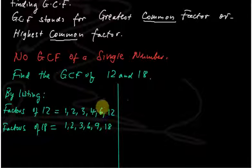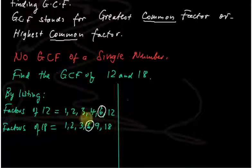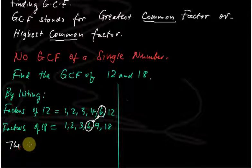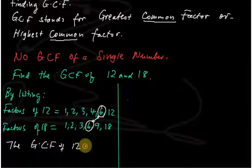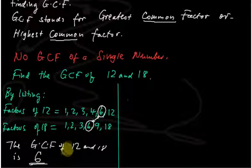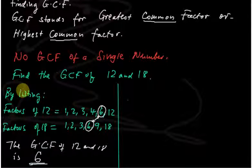While 1, 2, and 3 are all common factors, they are not the greatest. 6 is found in both numbers and is the highest common factor. Therefore, the GCF — or HCF — of 12 and 18 is 6.